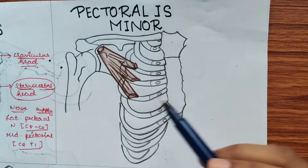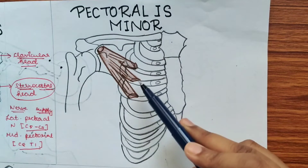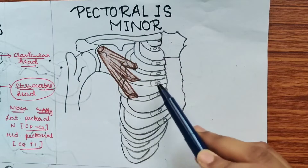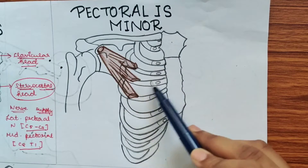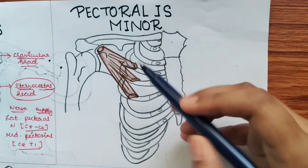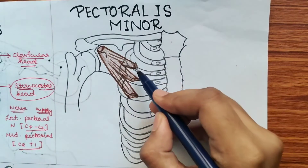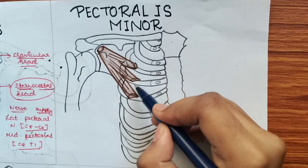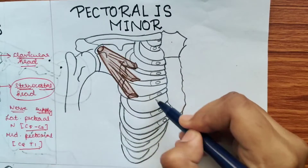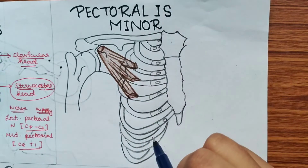It arises from the third, fourth, and fifth ribs near their costal cartilages. As you can see, this is arising from the ribs and not the costal cartilages.